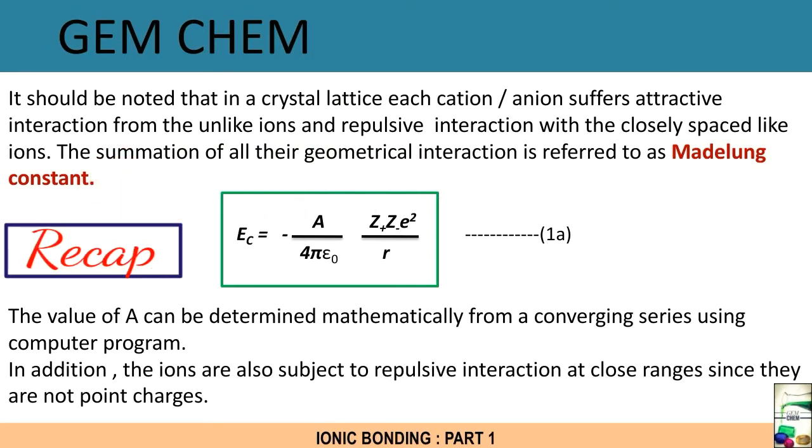Here we can get an idea of what is Madelung constant, and the Madelung constant is taken as A. The previous formula of electrostatic attraction followed by a term of A. We see that the coulombic potential is given by minus A by 4πε₀, Z⁺Z⁻e²/R. The value of A can be determined mathematically from a converging series using computer programs. What we mean by converging series will be discussed in details in the next video.